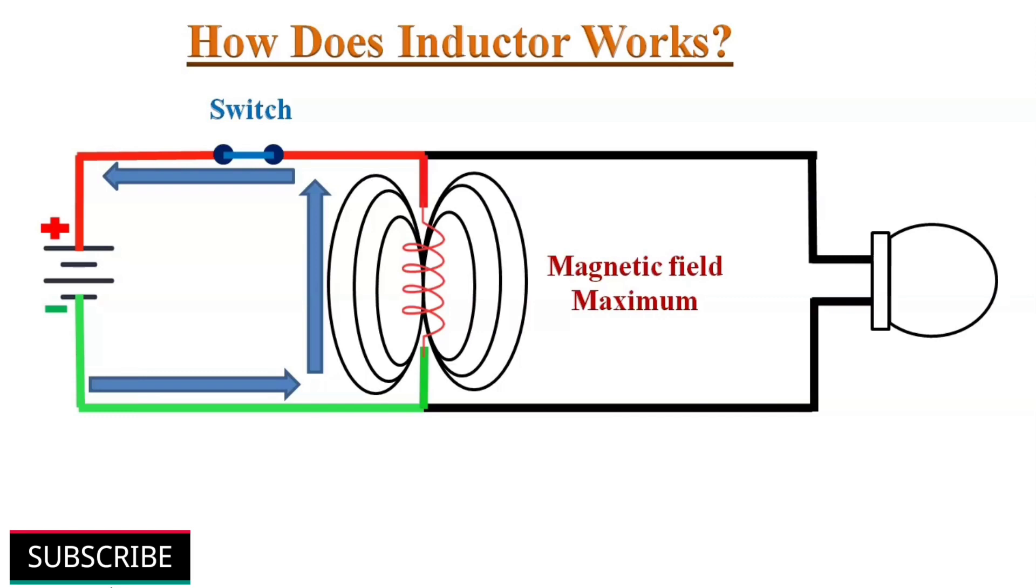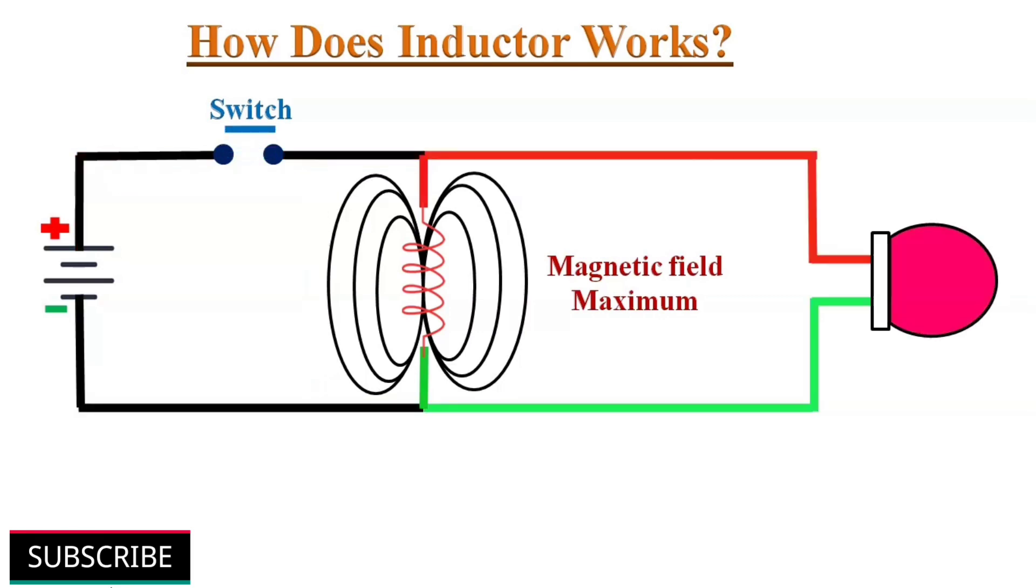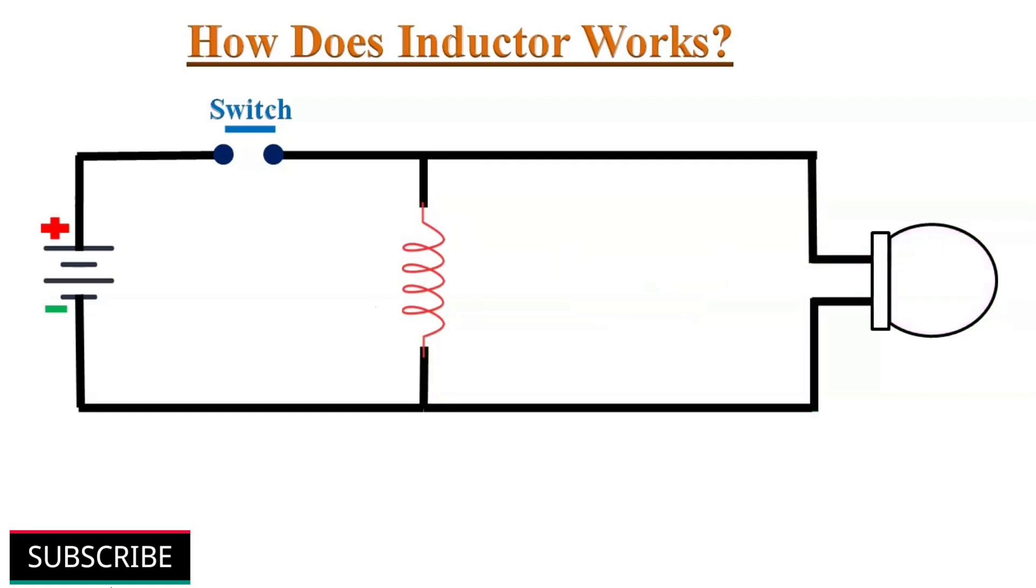When we power off this circuit, there will be a change or reduction in current. So the inductor tries to stop this change by losing charge. The magnetic field in the inductor converts back into electrical energy and tries to stabilize the current flow. This electrical energy flows through the lamp, powering it on until the resistance of the lamp dissipates the entire stored energy and the lamp turns off.